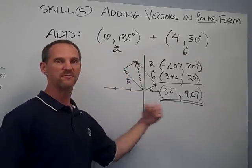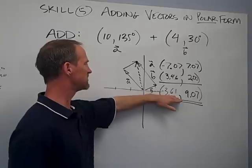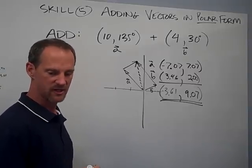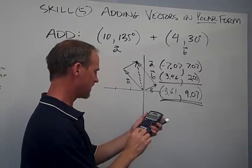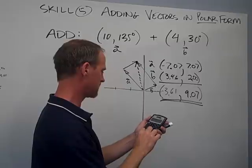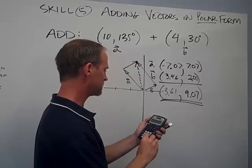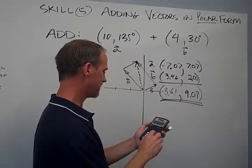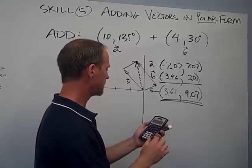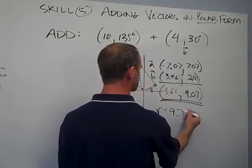Unfortunately, I'm not done — I'm going to convert that back, which is one of our earlier skills. To do that quickly, I square the x value, which makes it positive, square the y value, add them up, and take the square root. Let's grab the calculator: 3.61 squared plus 9.07 squared equals 95.29, and the square root of that is 9.76. So r equals 9.76 — that's the length of the vector.